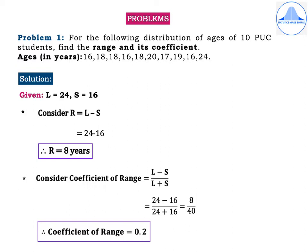Next, the coefficient of range = (L − S) / (L + S) = (24 − 16) / (24 + 16) = 8 / 40. Therefore, the coefficient of range is equal to 0.2, which is a relative measure and hence we do not write the unit of measurement.